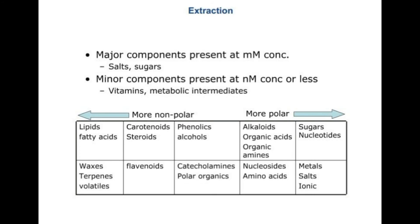These metabolites may be either polar or non-polar. For example, fatty acids and lipids are non-polar, meanwhile sugars and nucleotides are polar metabolites. They can be separated on the basis of their polarity using chromatography.